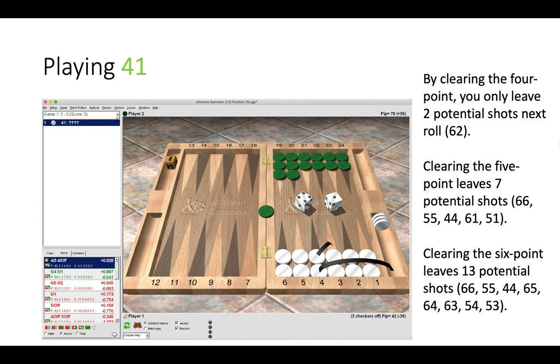Now by playing 4-1, we clear the 4-point, which again is a clear play. Anything else would be an error or a blunder. By clearing the 4-point, we only leave 2 potential shots with 6-2. Clearing the 5-point leaves 7 potential shots, and clearing the 6-point leaves 13. So again, we make the safest play which leads to fewer bad rolls in the future if green keeps on dancing. So this is correct, clearing the 4-point.